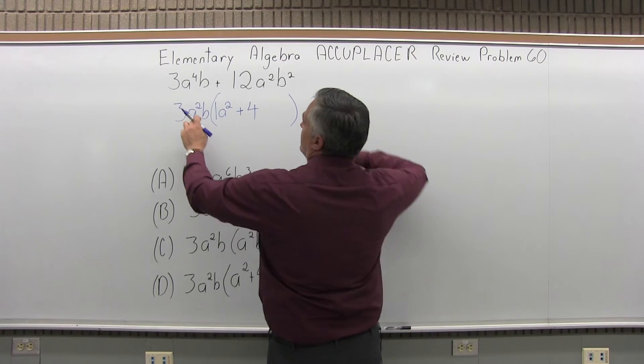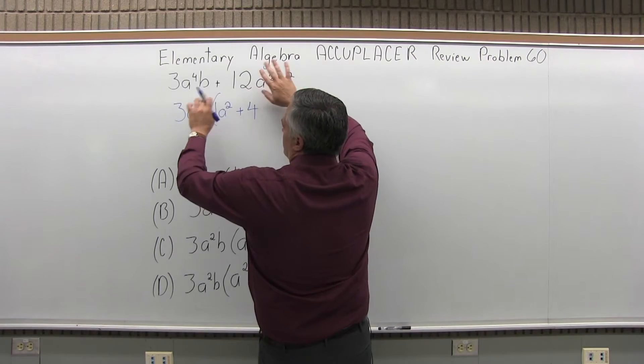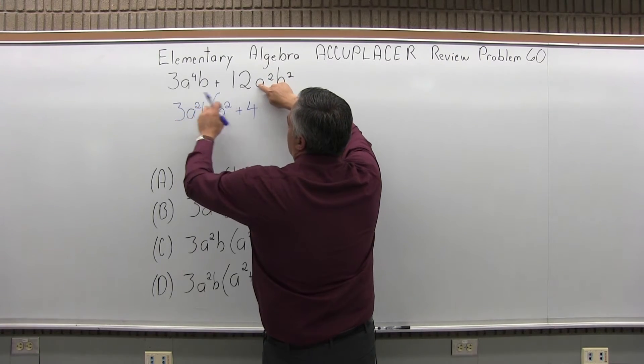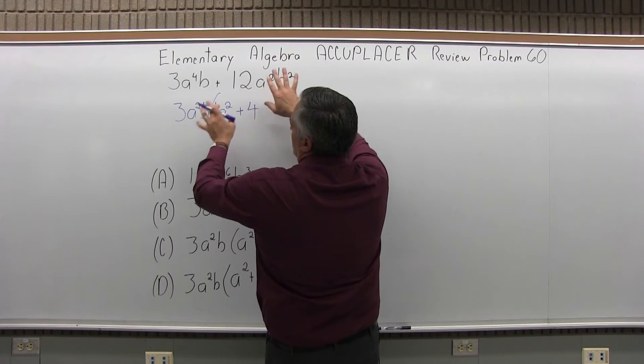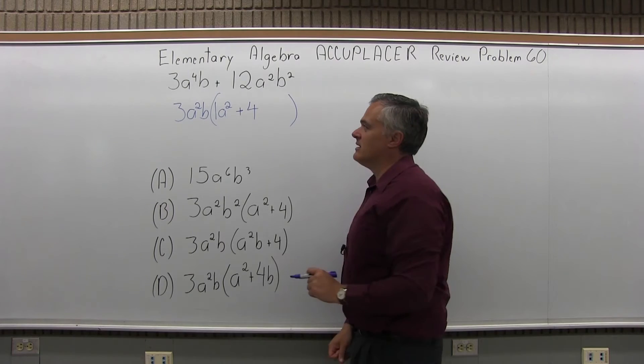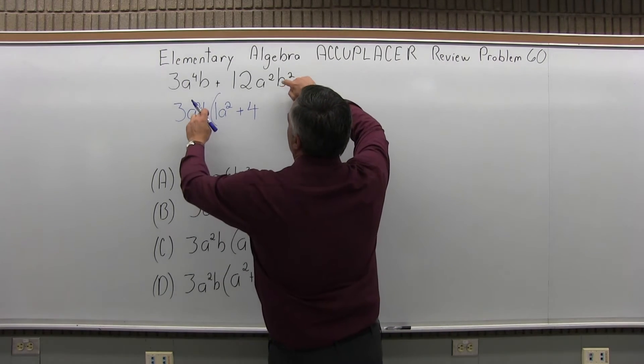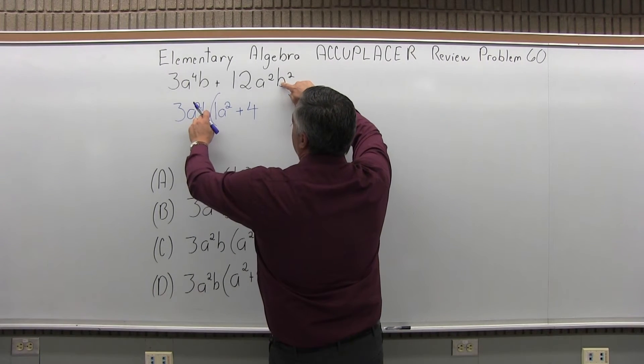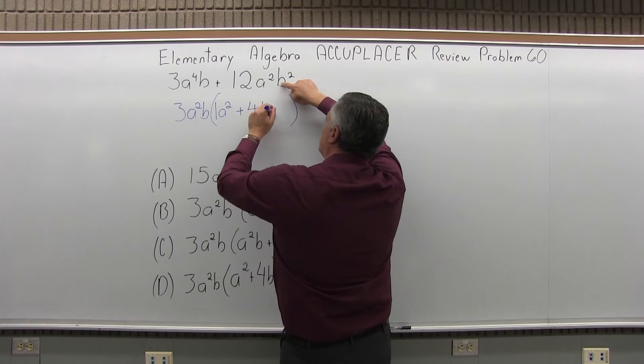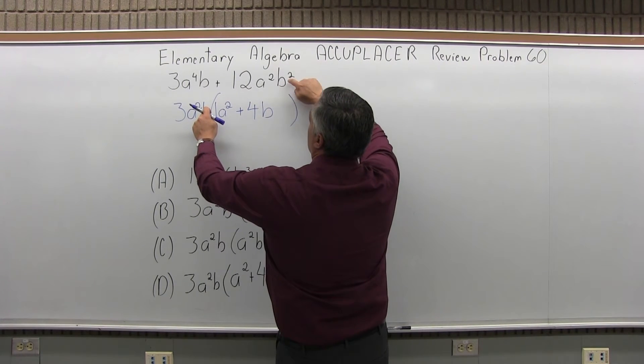Next, look at just the A's. Forget the numbers and the B's. Just the A's. A to the second times what is A to the second? Well, it's all set. I've already got it. It's there. And then B times what will give me B to the second? Well, times B to the first. B times B, B to the second.